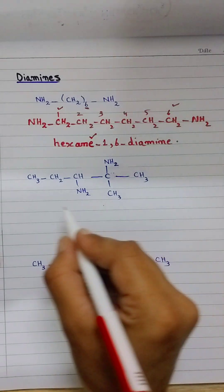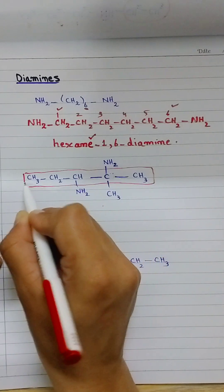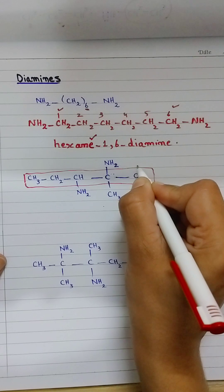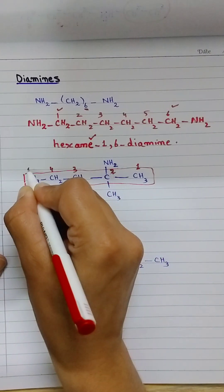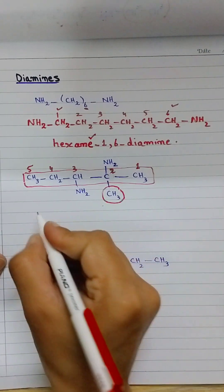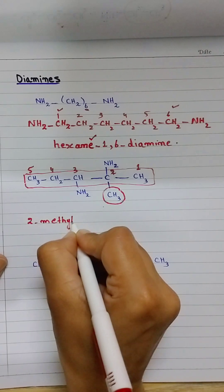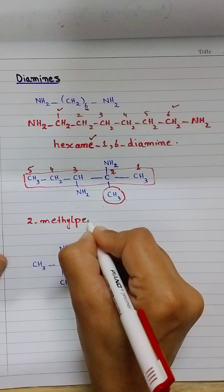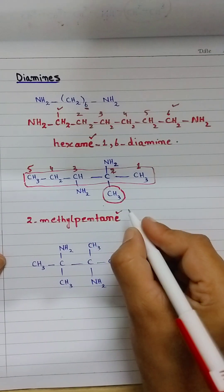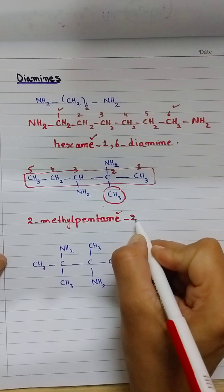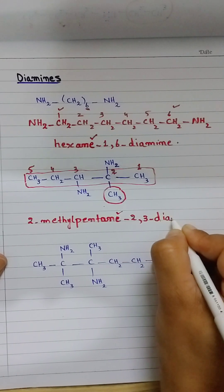In the next diamine example, first select the longest chain — the straight chain. Number from the lower position side where substituents get lower numbers. There is an amino group and a methyl group; the alkyl group's position and name are written first — methyl is at number 2. The five-carbon chain is pentane. Since there are 2 amino groups, 'e' is not replaced. One amino group is at carbon 2, the other at carbon 3. Two amino groups: 'di' and 'amine' — 2-methylpentane-2,3-diamine.